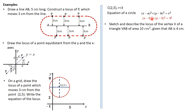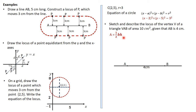The second-to-last question: sketch and describe the locus of the vertex V of a triangle VAB with area 10 cm², given that AB is four centimeters. This question is very similar to the first one — you should be able to draw parallel lines. The area of a triangle is half base times perpendicular height.